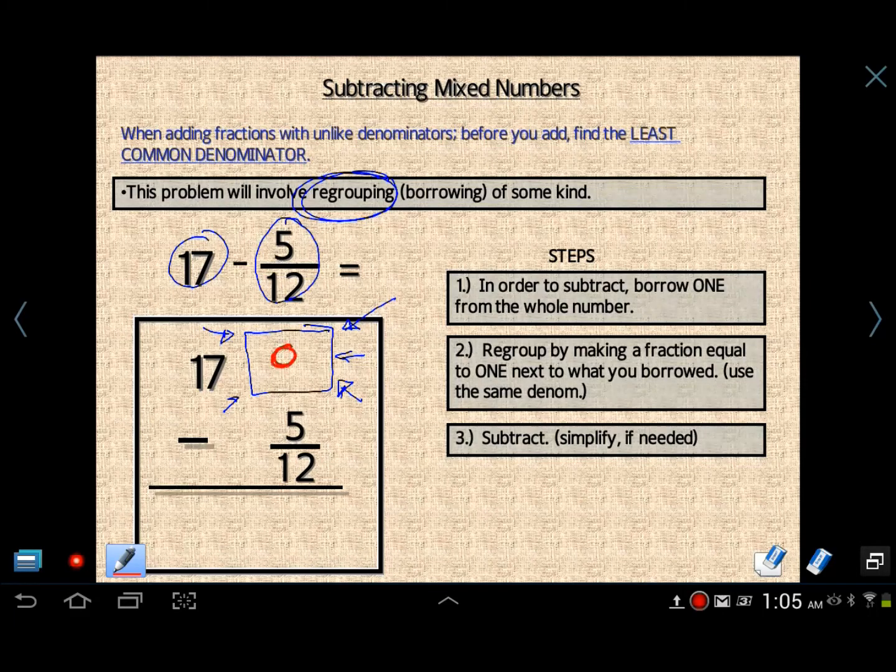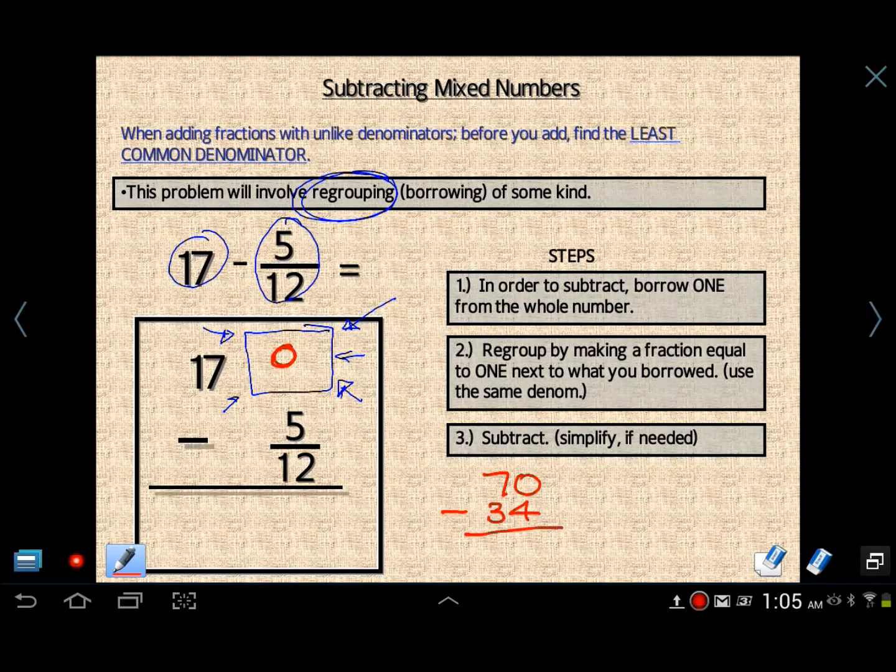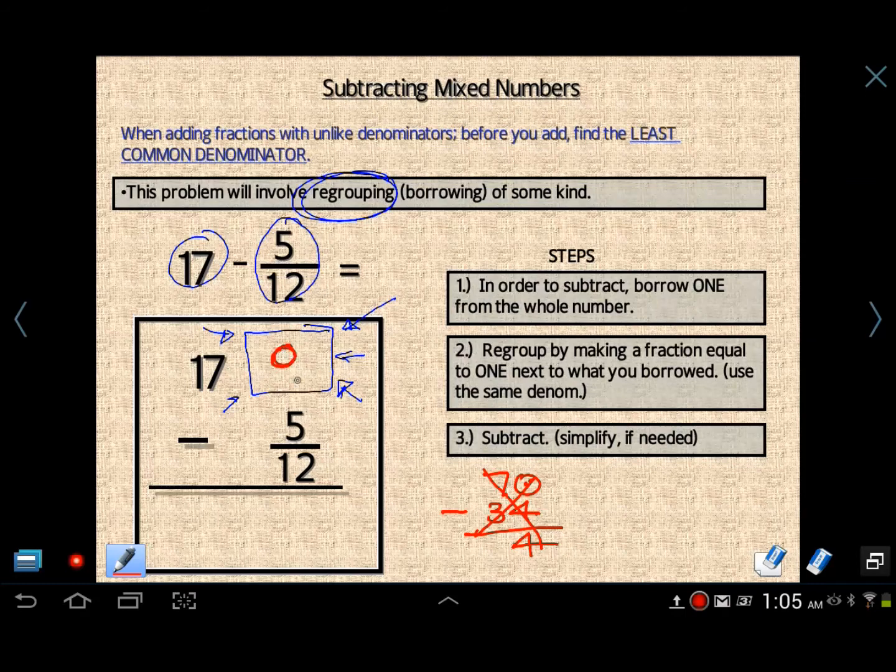You know, this is like a 0. You cannot have 0 there. Just like if I were to do 70 minus 34. Is it okay to say that 0 minus 4 is 4? Absolutely not. You were taught better than that. Same thing right here. We can't say that 0 minus 5 12ths is still 5 12ths, because we know that is not true. If you think so, then you're kidding yourself, or you're just being lazy.